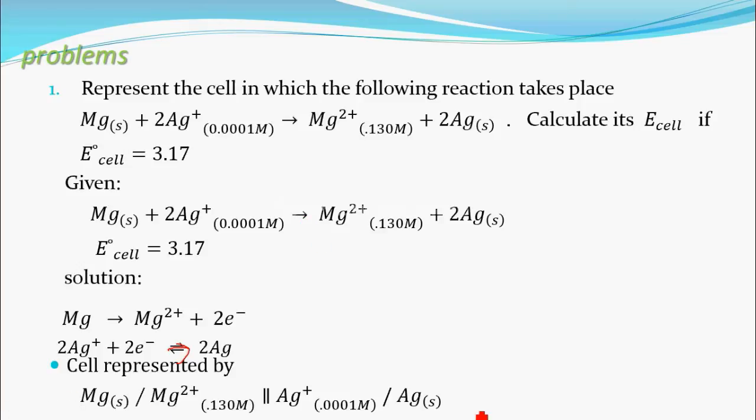This cell, you have to represent the cell. The double bar indicates the salt bridge. Write the oxidation part on this side, separated by a single bar. On this side, write the reduction part, separating the ions and solid with a single bar.